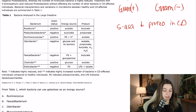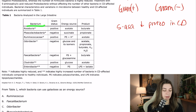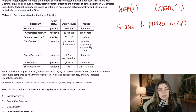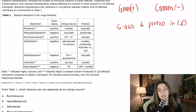Now go down and read any notes. One star indicates highly reduced, and two stars indicates highly increased number of bacteria in CD-affected individuals compared to healthy individuals. PS indicates polysaccharides. LPS indicates lipopolysaccharides. So that's a lot of notes, but they're important. Now we look at the columns in the table: bacteria, gram status, the energy source of the bacteria, and the product of metabolism. All the stars are indicating CD-affected individuals. Now that I'm oriented to the table, I'm not going to look at it further — going straight into the questions.